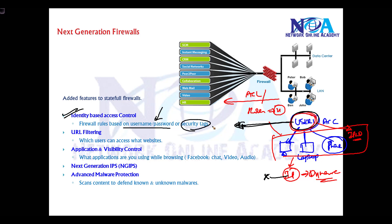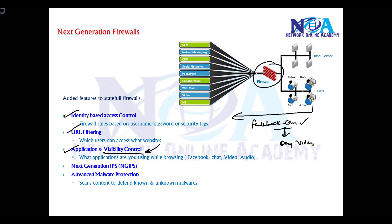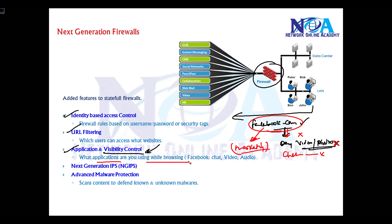Application visibility and control is another common feature in next generation firewalls. For example, you may want to allow users to access Facebook for marketing purposes, but deny specific micro-applications within Facebook such as video chat, audio chat, or messaging. We can define and filter rules based on these specific applications while browsing.